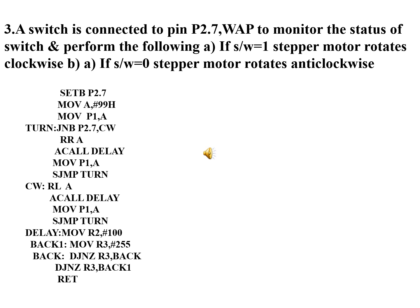In the accumulator, the sequence 33 is rotated left by one step, giving the sequence 66. If the bit P2.7 equals one, the stepper motor rotates clockwise using the RRA (rotate right) instruction. After outputting every sequence, the delay is called, and this process repeats infinitely.